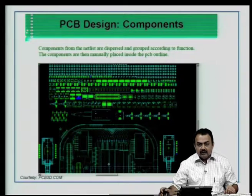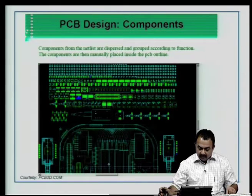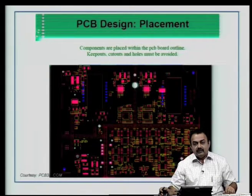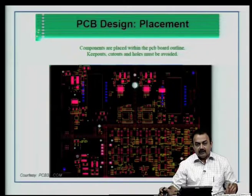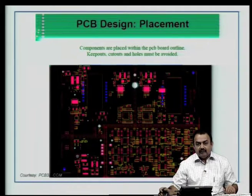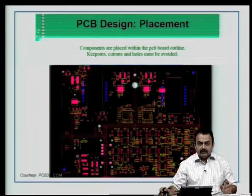Components from the net list are dispersed and grouped. You have to use your skills to manually place the components inside the PCB outline — at least 10 to 20 percent of them — and then proceed with assisted placement. Components are placed within the PCB board outline. The board outline definition is a key factor in deciding the product size, keepouts, cutouts and holes. Mechanical holes other than electrical interconnect holes need to be created; normally you will have mounting holes.